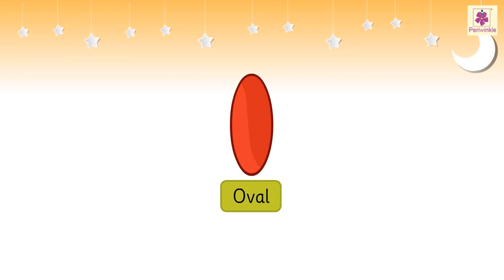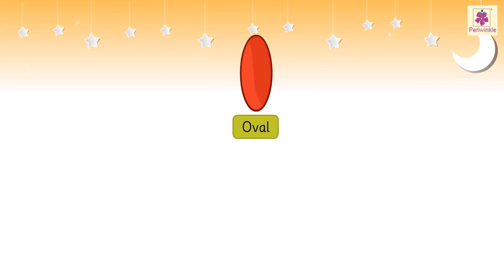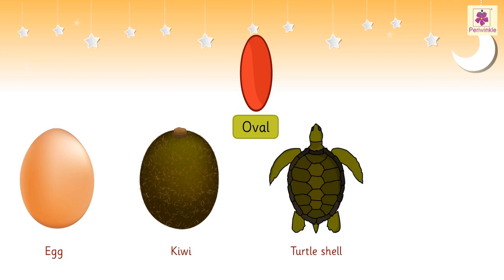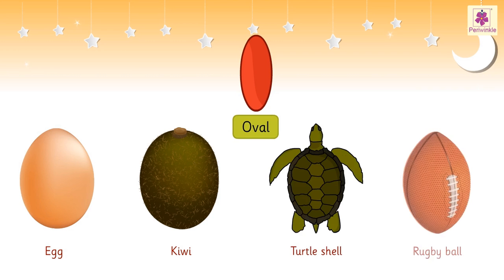An oval shape is the one that looks like an egg. Other examples are a kiwi, a turtle shell, and a rugby ball.